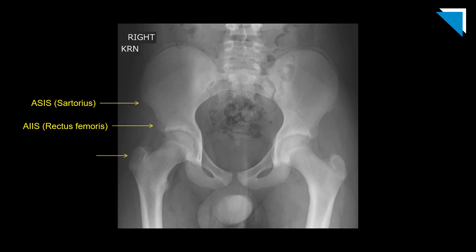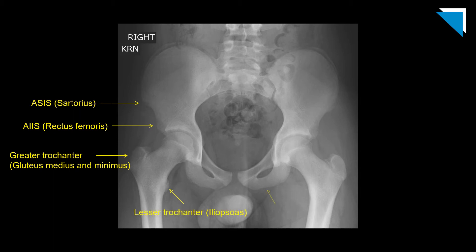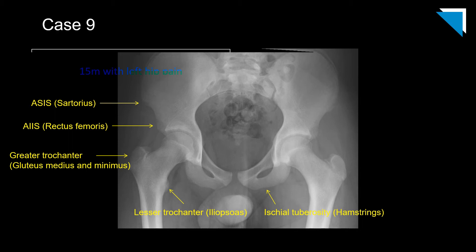The greater femoral trochanter is where the gluteus medius and minimus tendons insert, and the iliopsoas tendon inserts at the lesser femoral trochanter. The hamstring tendons originate at the ischial tuberosity. There are a few other important landmarks — for example, the abdominal muscles insert at the iliac crests — but if you commit these landmarks to memory, you'll catch the vast majority of pelvic avulsion injuries.